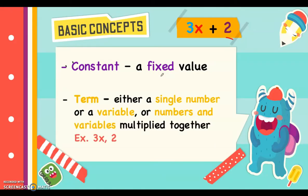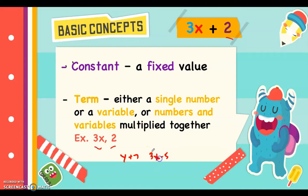We also have what we call a term. A term is either a single number, a variable, or numbers and variables multiplied together. The number of terms in an expression or equation depends on the number of addition and subtraction operations. For example, 3x and 2 are each a term. In y plus 7, there are two terms. In 3x minus 5, the first term is 3x and the other is 5. Multiplication like 3x is considered one term, and division like 3 over x is also one term.